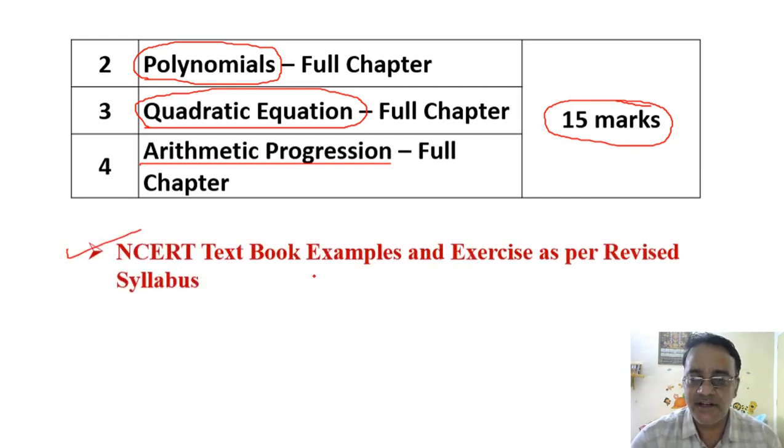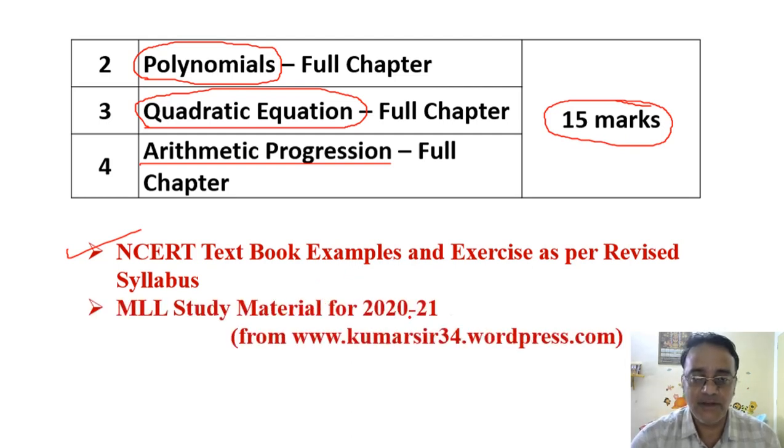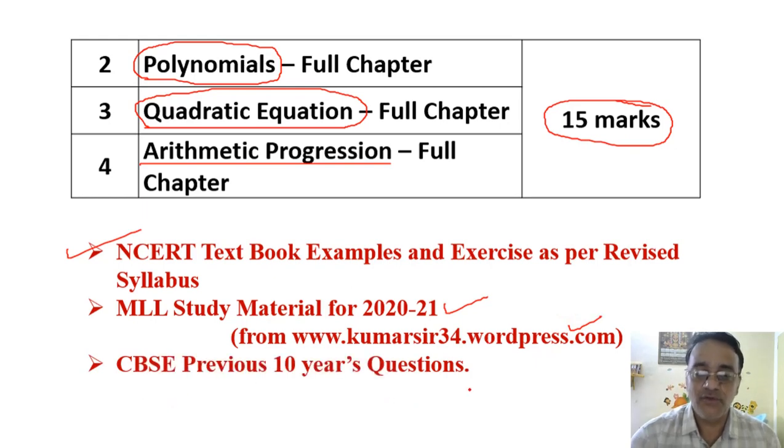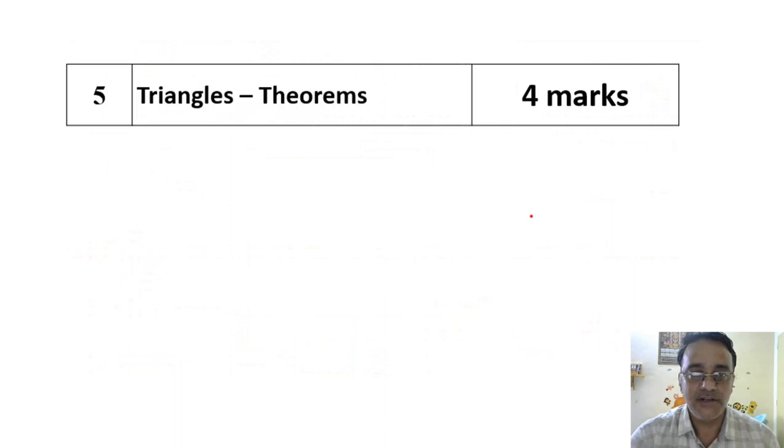In this, first NCERT textbook ke saare examples with respect to the revised syllabus and exercise questions. Next, again you have to do all the questions, whatever the questions I am going to publish in minimum level study material which is available in this website, my blog. And the third one is you have to do all the CBSE previous 10 years questions excluding the deleted part. So now 15 plus 6 is 21 marks, so up to here 21 marks.